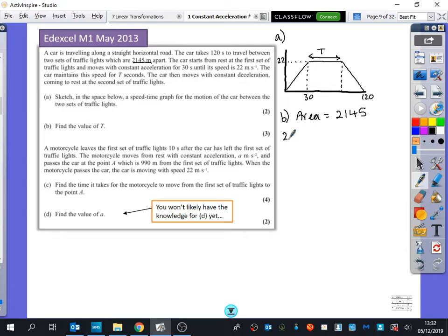So our parallel sides, our 2,145 is the average of T plus 120 multiplied by the gap in between them. That gap is 22. So we get 2,145 is equal to 11 T plus 120. 2,145 divided by 11, 195. So we get 195 is T plus 120. So T is 75 seconds. So we've got the speed time graph done. We've got that T is 75 seconds.